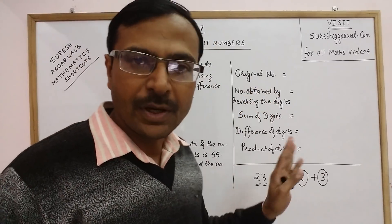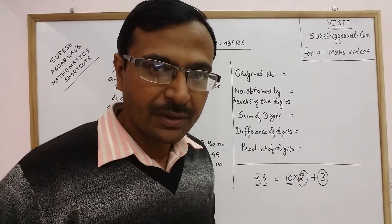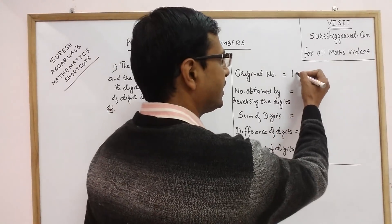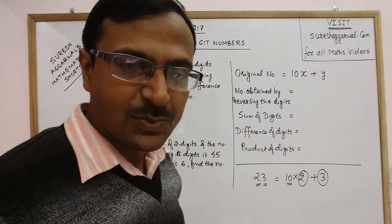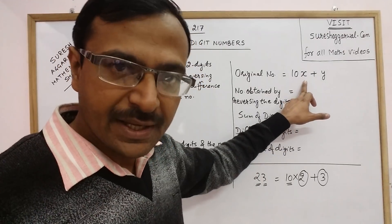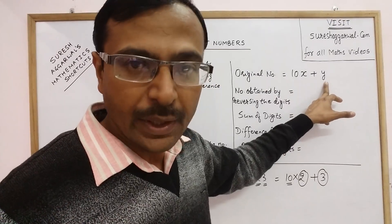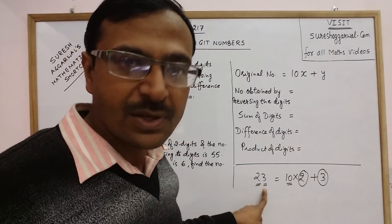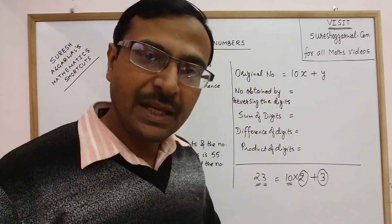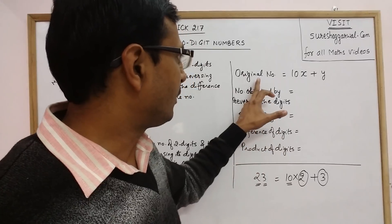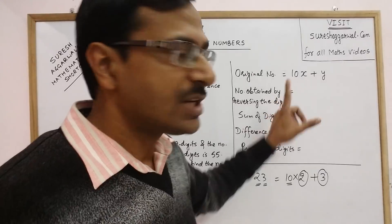So the original number, when you have to consider it, you assume it as 10x plus y. In 10x plus y, the digit x is the tens place of the number and y is the units place. The basic assumption for any two-digit number is that it is written as 10x plus y. Remember, this is the original number.